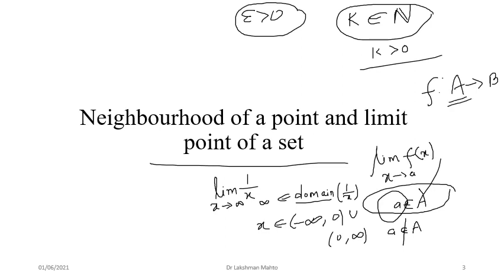What is the association of a with the domain of the function? You will see that a must be a limit point of the domain. If infinity is a limit point of the domain of 1/x, that is why we are calculating the limit as x tends to infinity. We are never calculating the limit of a function at a point which is not a limit point of the domain. It must be a limit point of the domain — that is the essential criterion.